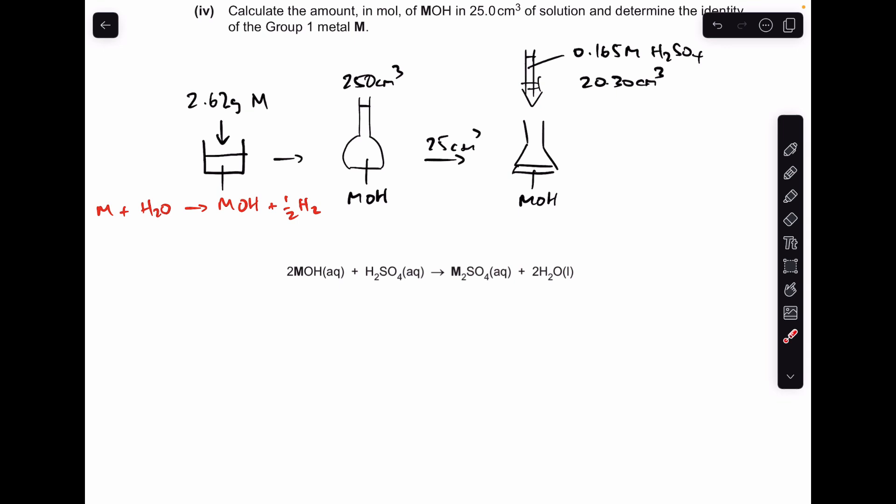So the first thing I'm going to do is work out the moles of sulfuric acid in that mean titre. That's just concentration times volume in dm³: 3.35 × 10⁻³.